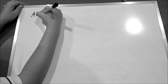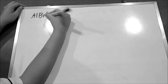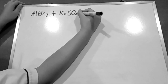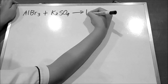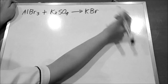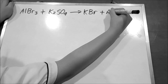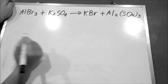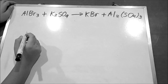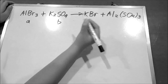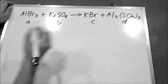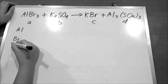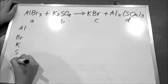So now let's do a harder equation than the previous one. This is the harder equation that we choose: AlBr3 plus K2SO4 equals to KBr plus Al2(SO4)3. Like the previous process, we use variables to represent each compound, and then we write down all the elements in the equation.